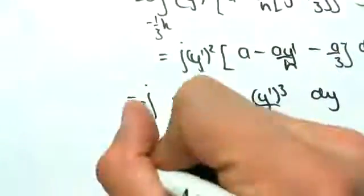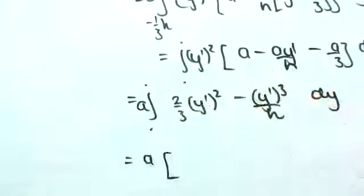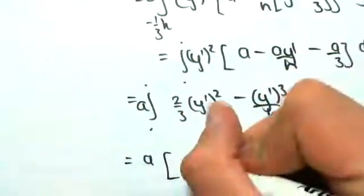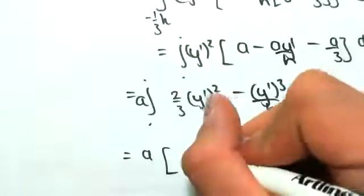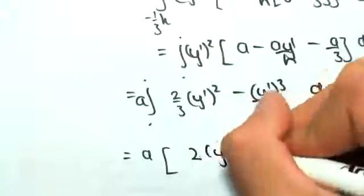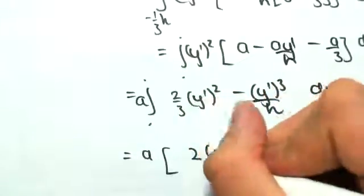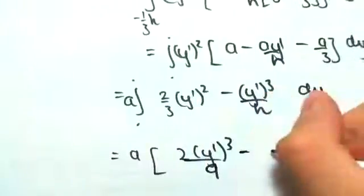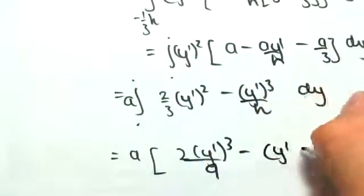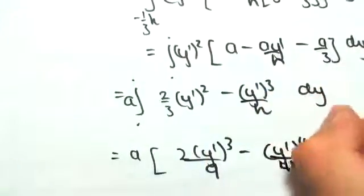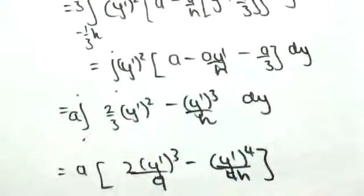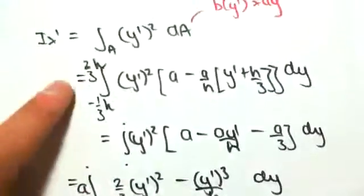If we're now going to integrate this, so a stays out the front, the integral would be 2y dash cubed on 9 minus y dash to the power of 4 on 4h. And this is between our original values.